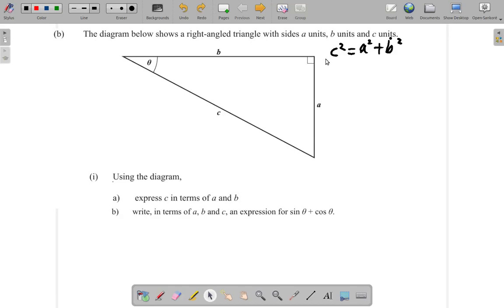Okay, previously we found that C squared was A squared plus B squared, but I had put part B here to this question and placed the answer C squared equals A squared plus B squared up here to make space. So, this says write in terms of A, B, and C, an expression for sine theta plus cos theta.